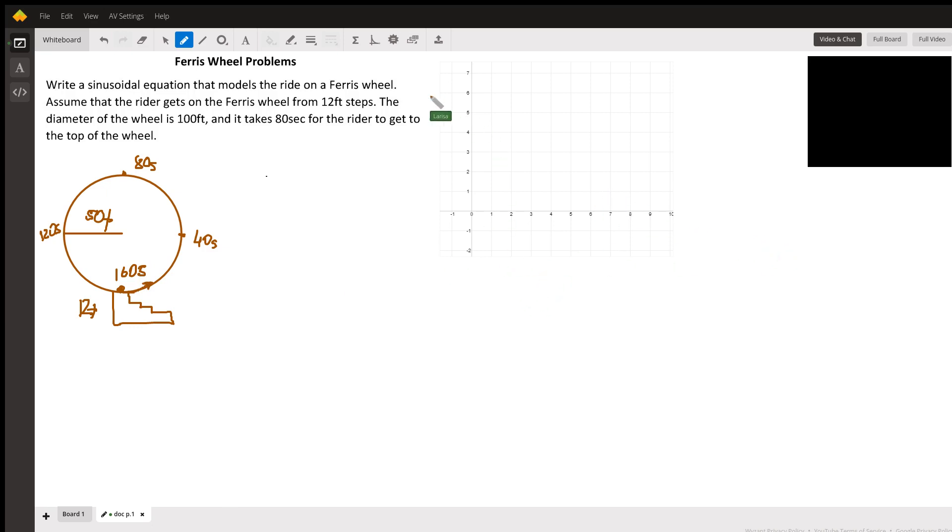How to plot this graph? Y axis will be height in feet. X axis will be time in seconds.